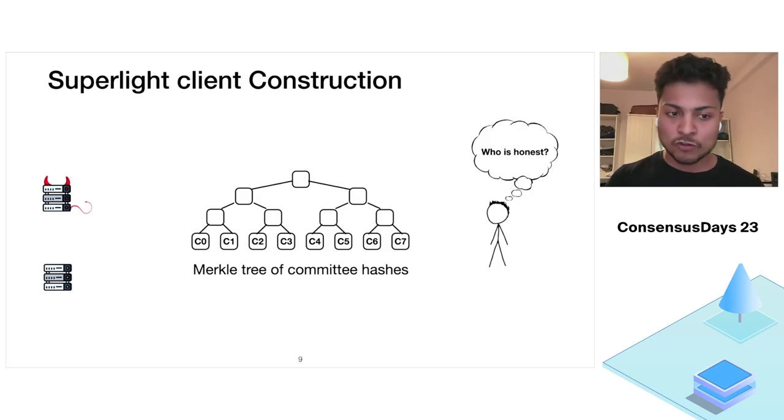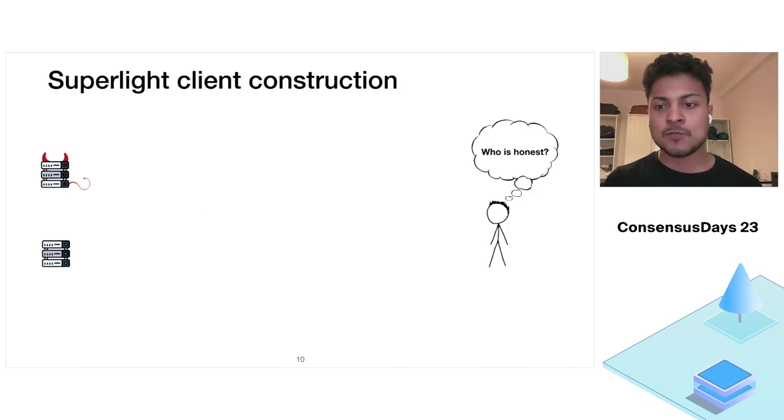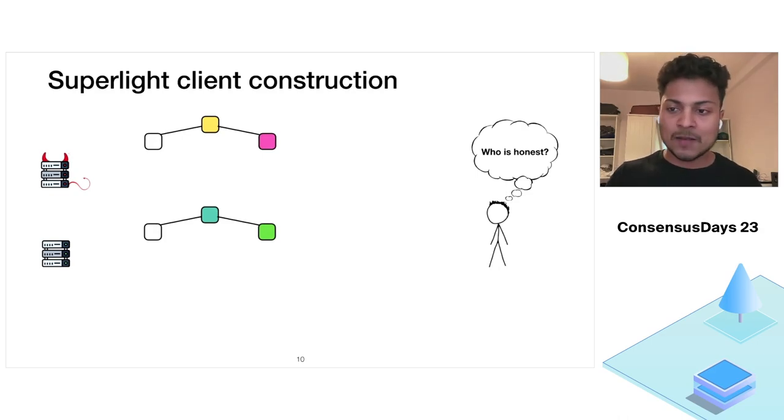For this, Bob asks both the provers to generate a Merkle tree, and the leaf of this Merkle tree is the committee hashes. Now Bob can simply ask both the provers to present the root of the tree. As we know they disagree, the roots must also be different. Now Bob will ask both of the provers to present the children of the roots. Bob will first check the left child and then the right child. So here in our example, the left child is the same. So it will ask the provers to present the children of the right child. And so on. And once we reach the leaf, as in our example here, the left leaf is already different. We know that this is the first point of disagreement.